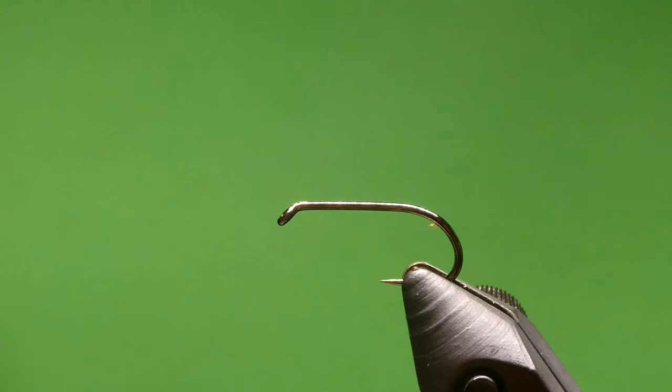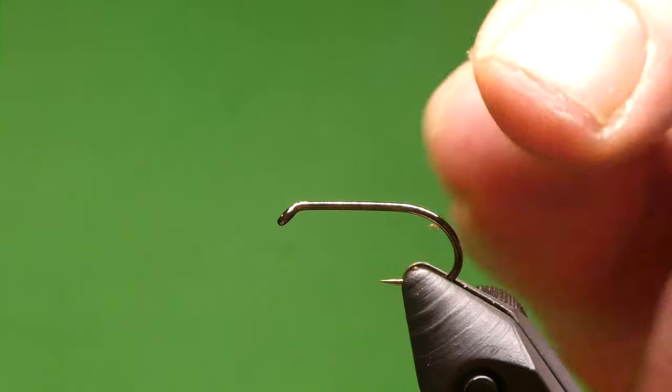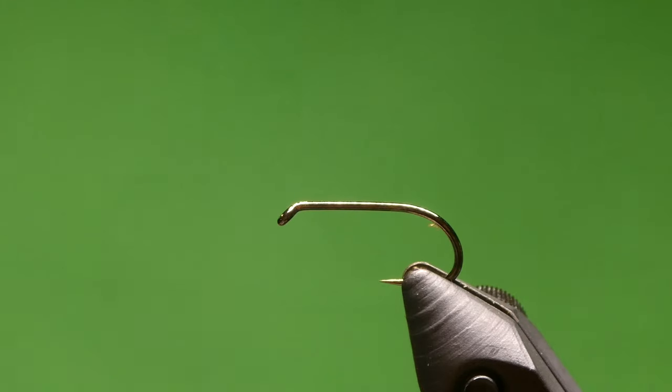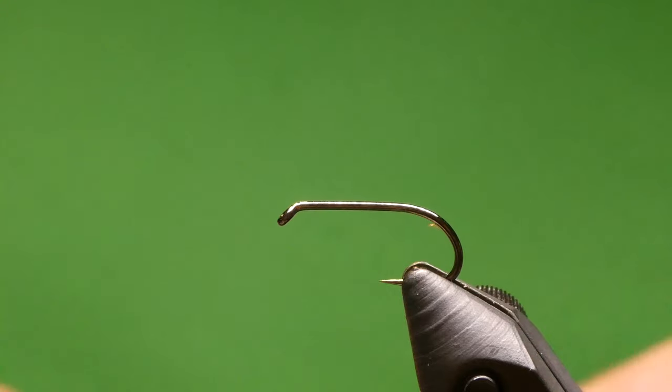Evening guys, how's it going tonight? I'm going to be tying the black olive buzzer. In the vise I've got the Fario barbless 301 wet fly hook, and the thread I'll be using is the UTC black in the 140.